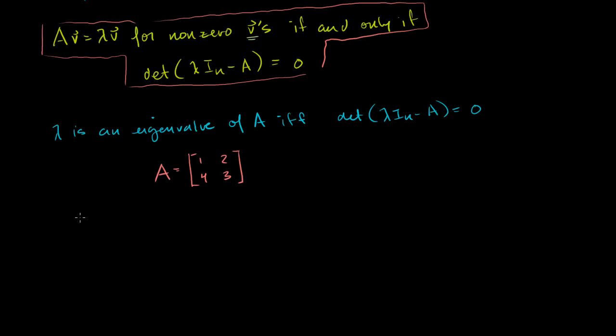So if lambda is an eigenvalue of A, then this right here tells us that the determinant of lambda times the identity matrix, so it's going to be the identity matrix in R2. So lambda times 1, 0, 0, 1 minus A, 1, 2, 4, 3 is going to be equal to 0.